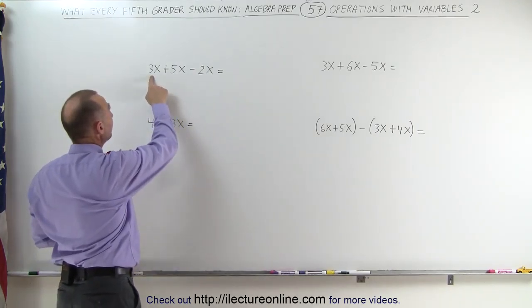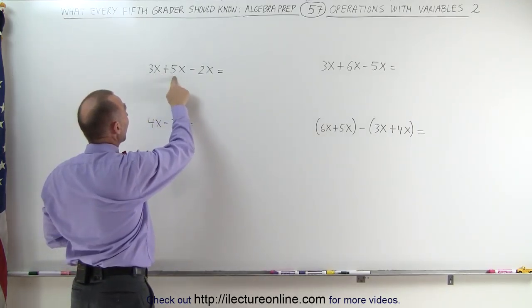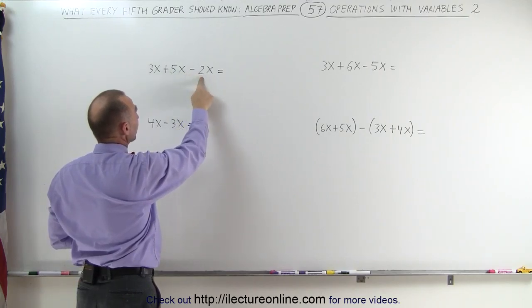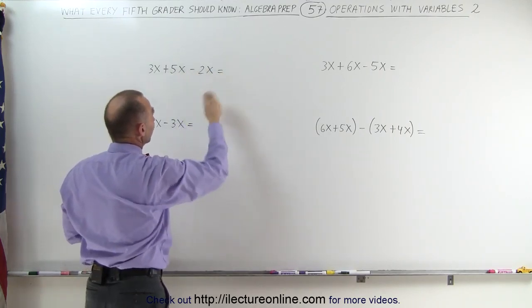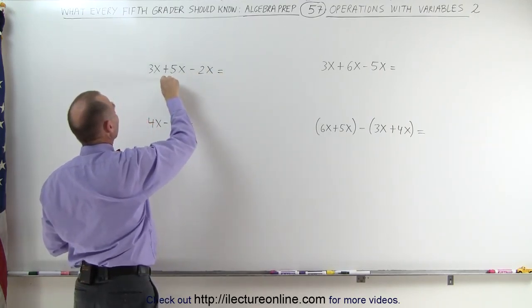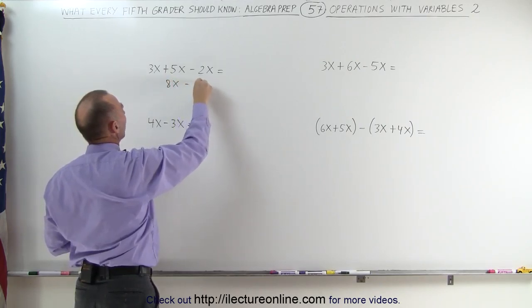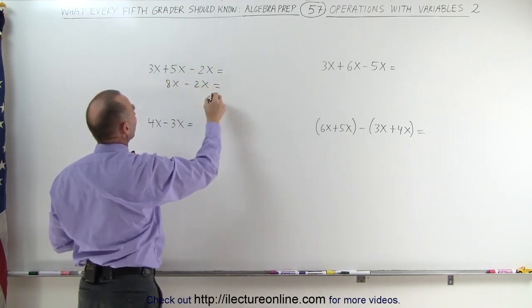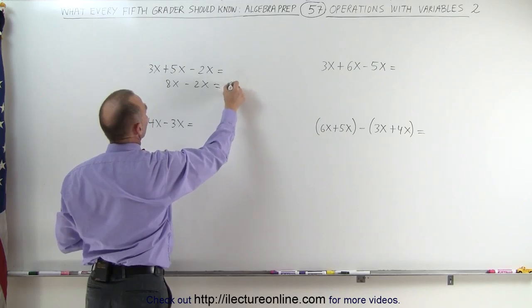Well, there's 3 of them, plus 5 of them, 3 plus 5 is 8, and then we subtract 2 of them, 8 minus 2 is 6. So this simply becomes 8x minus 2x, and then 8x minus 2x is equal to 6x.